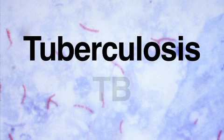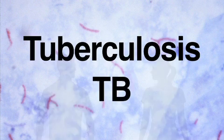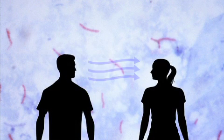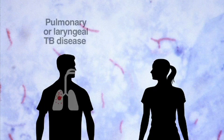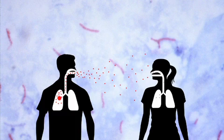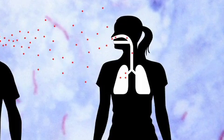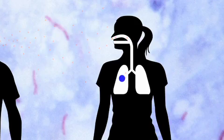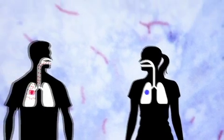Tuberculosis, also called TB, is spread from person to person through the air. People who have pulmonary or laryngeal TB disease can spread infectious particles into the air when they cough, sneeze, shout, or sing. Infection occurs when another person inhales these particles and they reach the alveoli of the lungs.